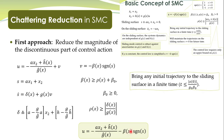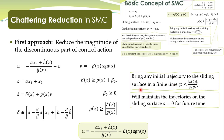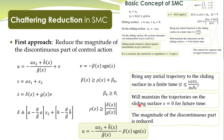We have demonstrated that this control action brings any initial trajectory to the sliding surface in finite time and maintains the trajectories on the sliding surface for future time. On the sliding surface the system is described by reduced-order dynamics and trajectories converge to the equilibrium point. The magnitude of the discontinuous part is reduced, hence the effect of chattering will be reduced. This is the first approach.